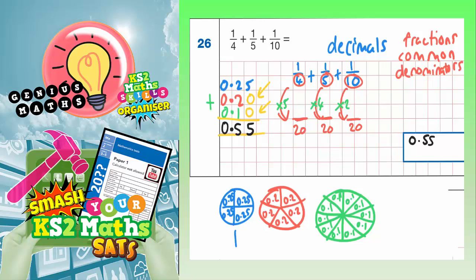And whatever we've done to each of those denominators, we must also do the same to the numerators. So on this first one, it was times 5. So 1 times 5 will be 5. On the second one, we've times by 4. So 1 times 4 is 4. And on the third one, we've times by 2. So 1 times 2 is 2.